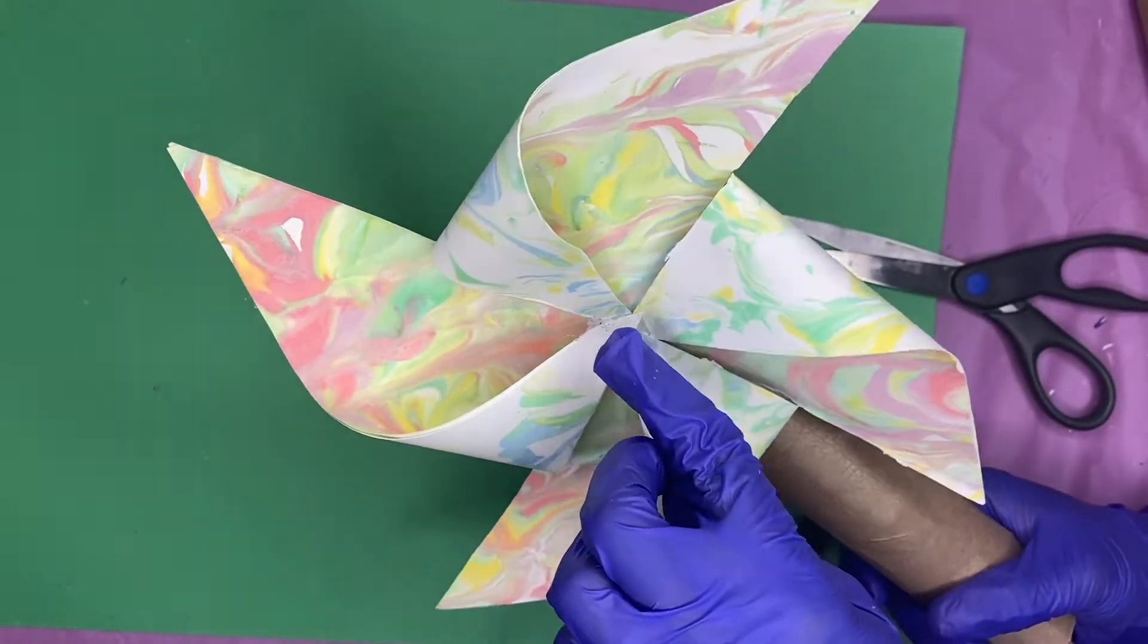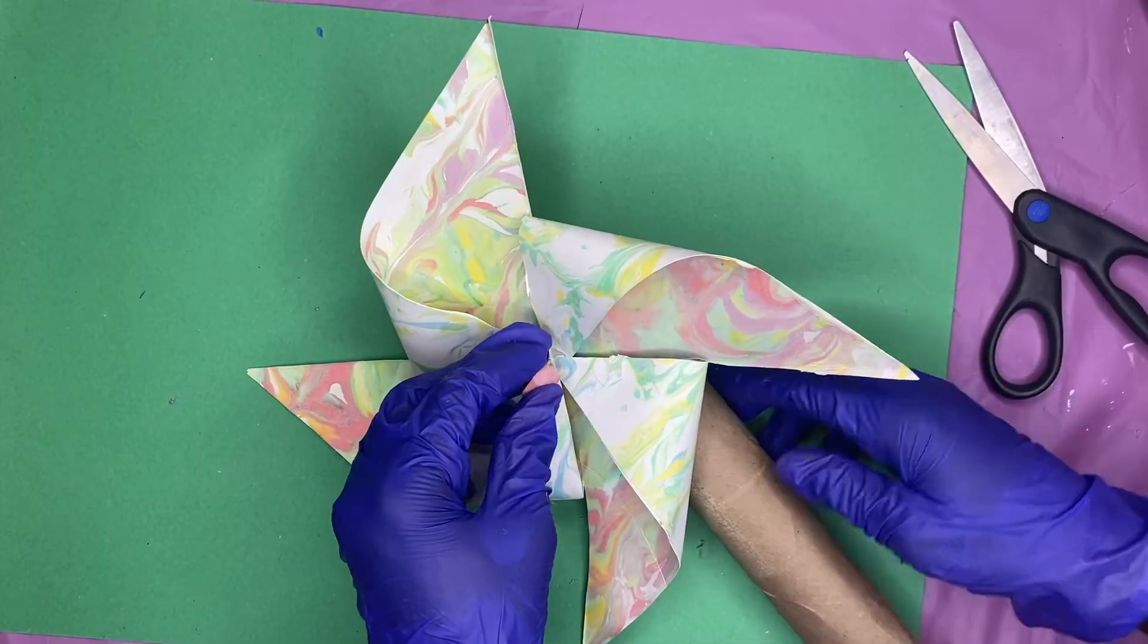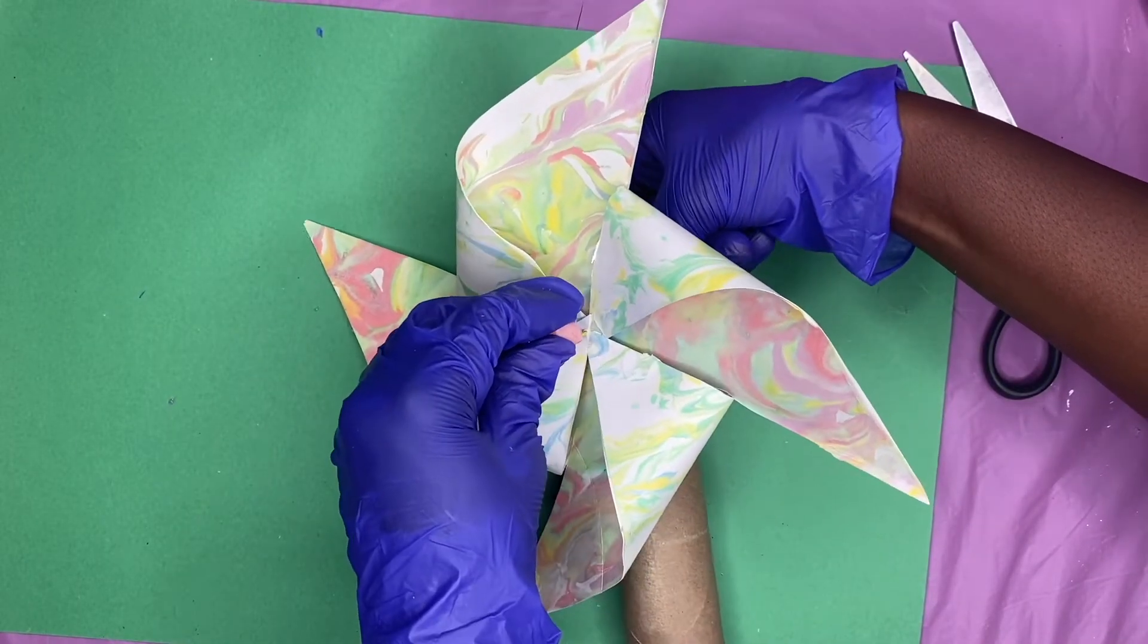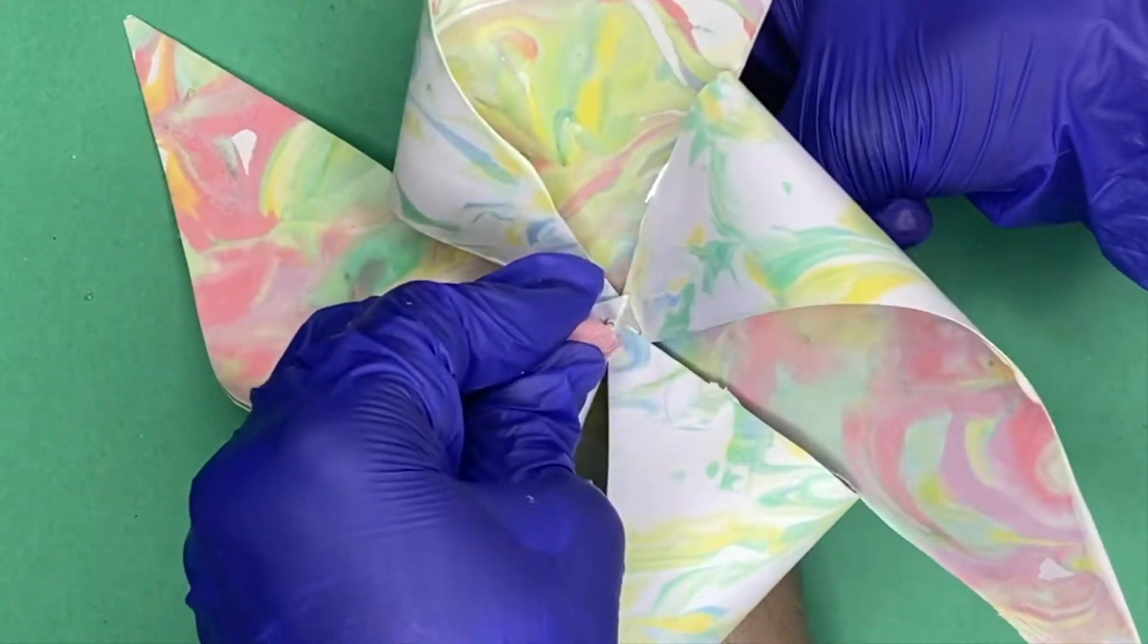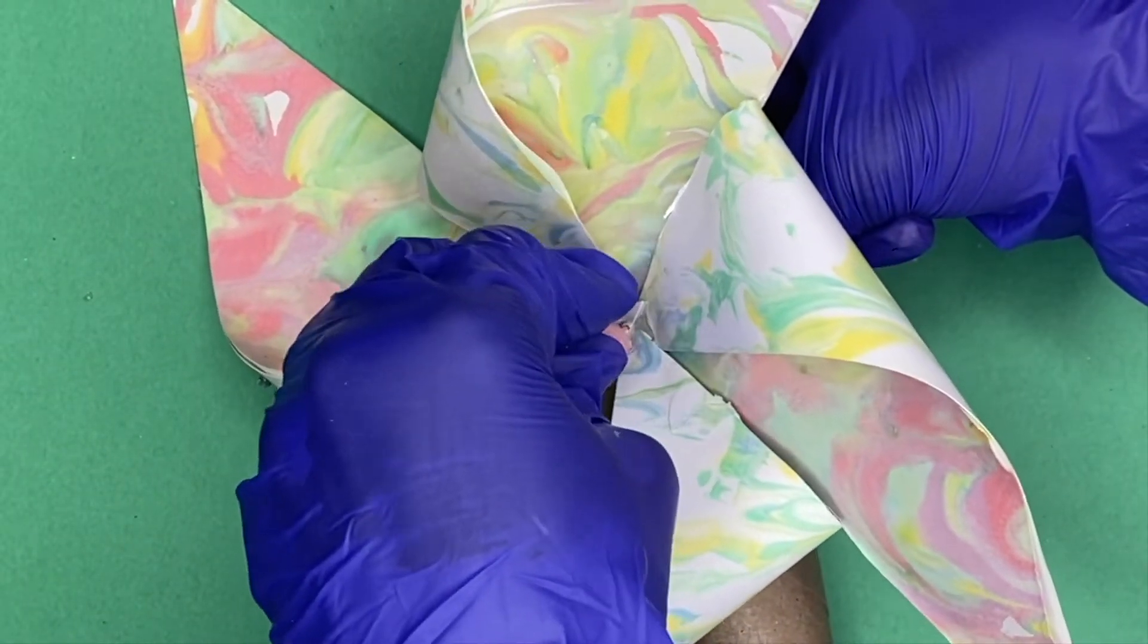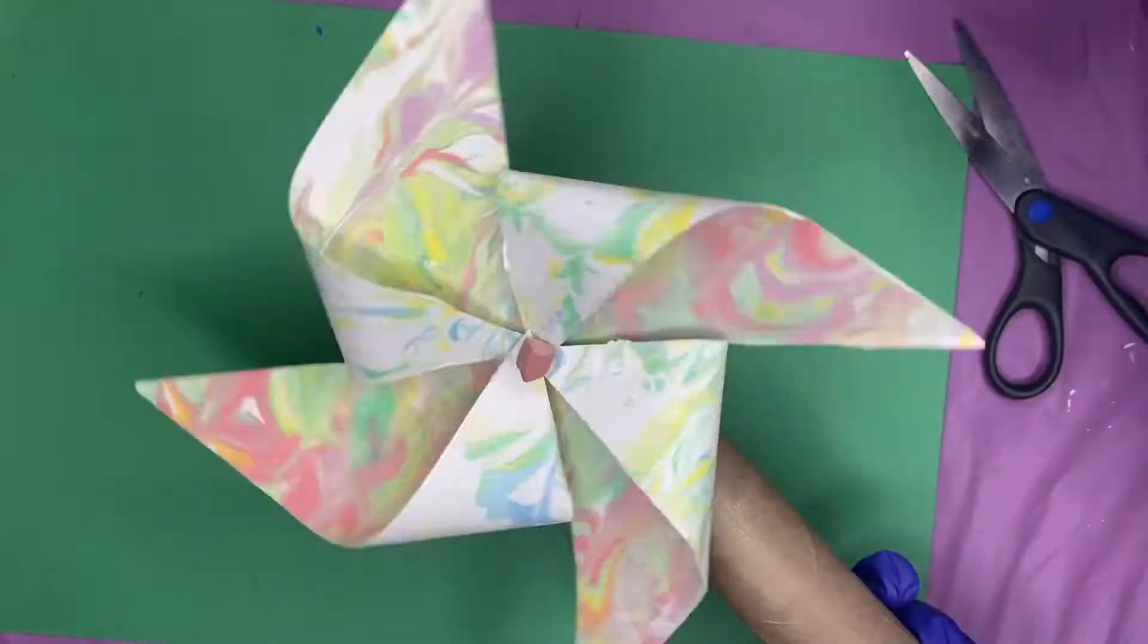And to keep the pinwheel in place, I'm going to take a little piece of an eraser and I am going to put it on my paper clip just like this. I'm not going to push it down too tight, but just leave enough room so that it can spin freely, and you are done! That is how you make a pinwheel.